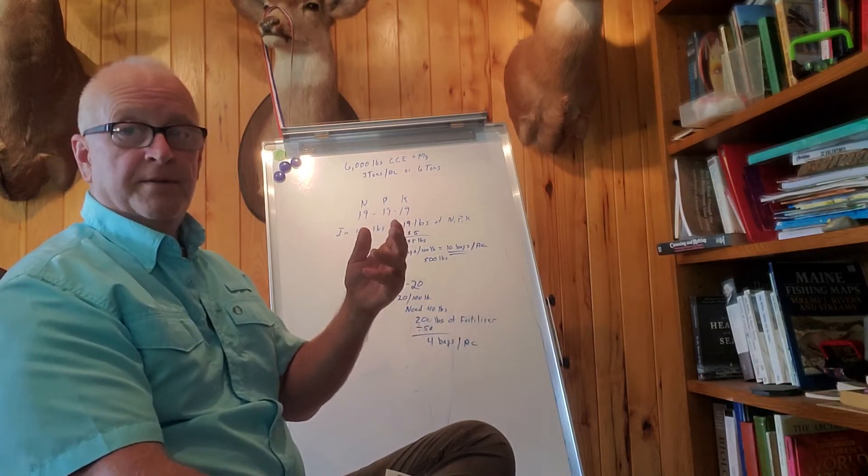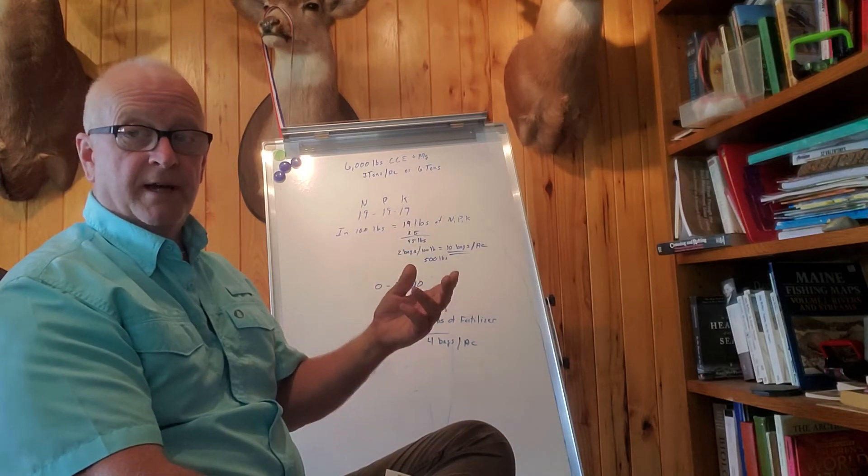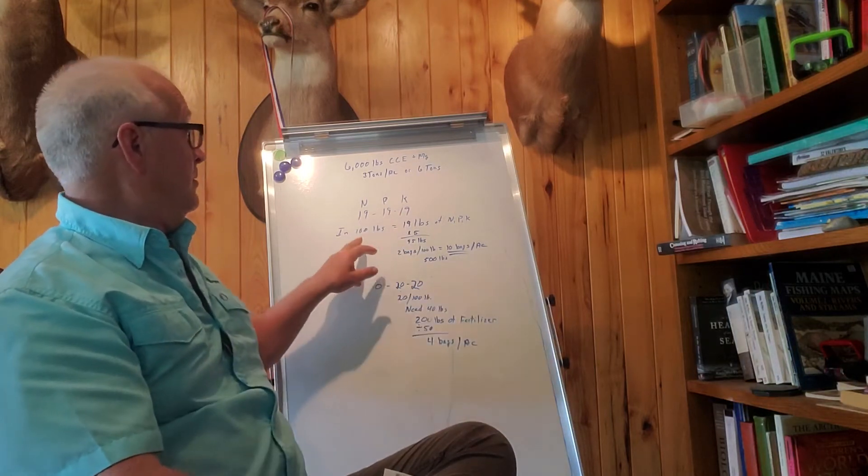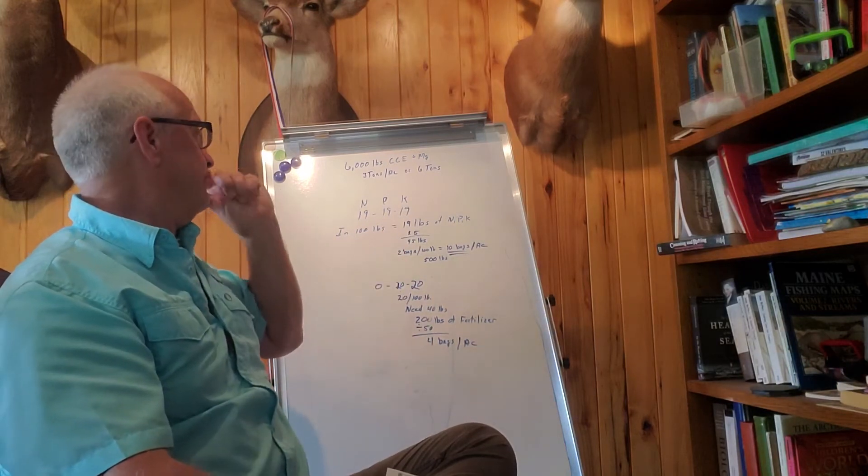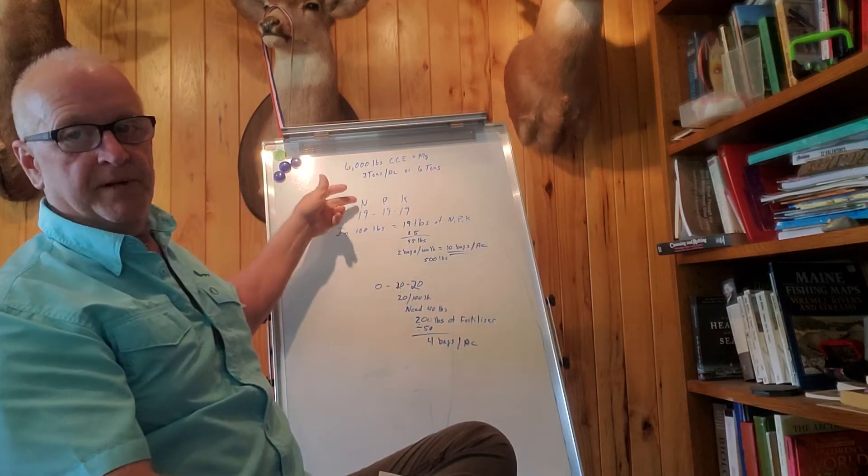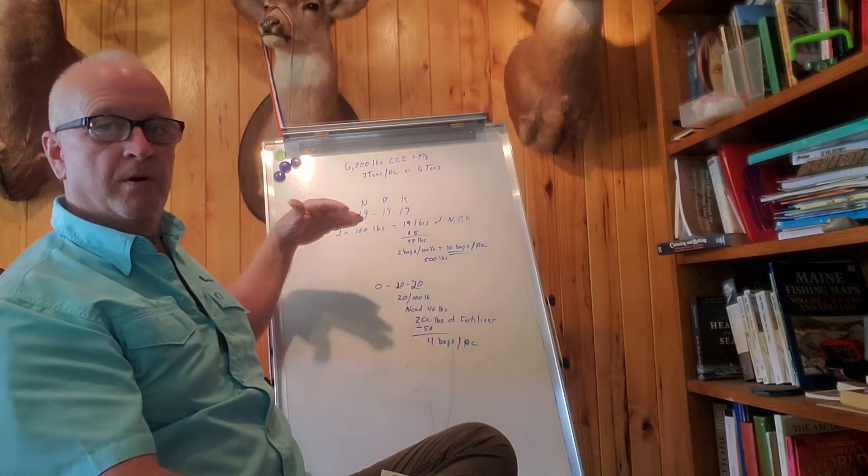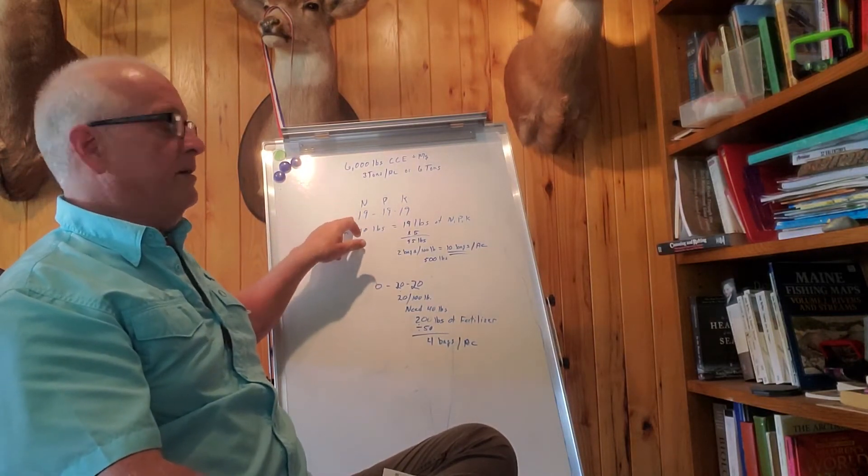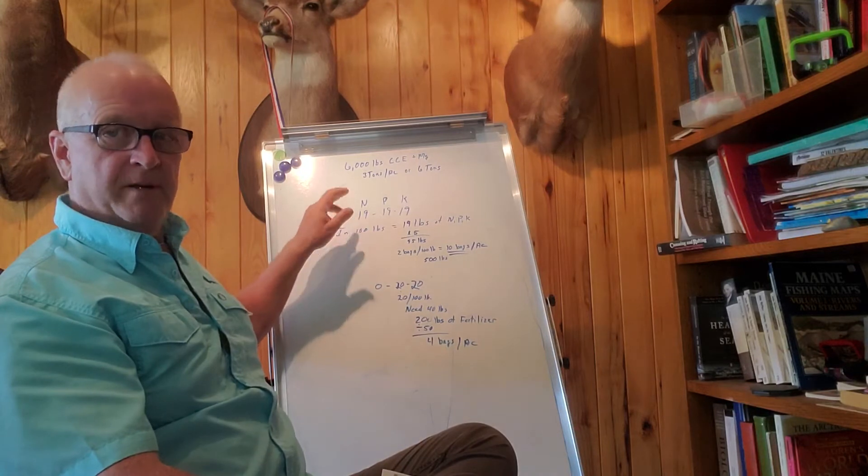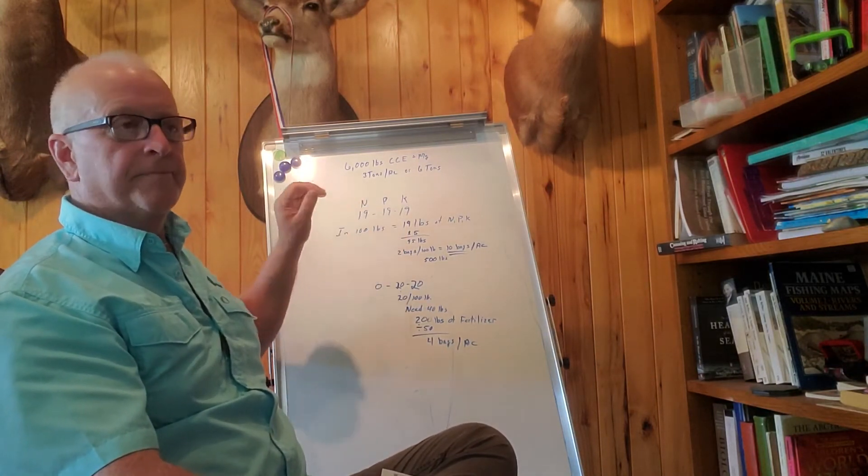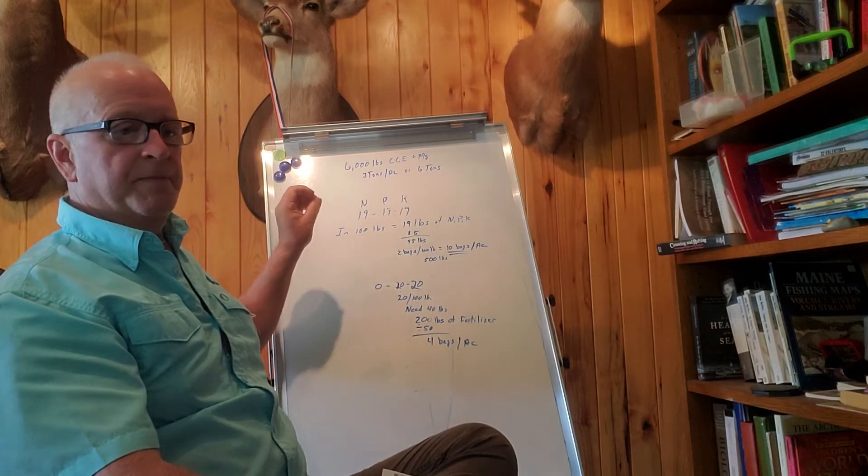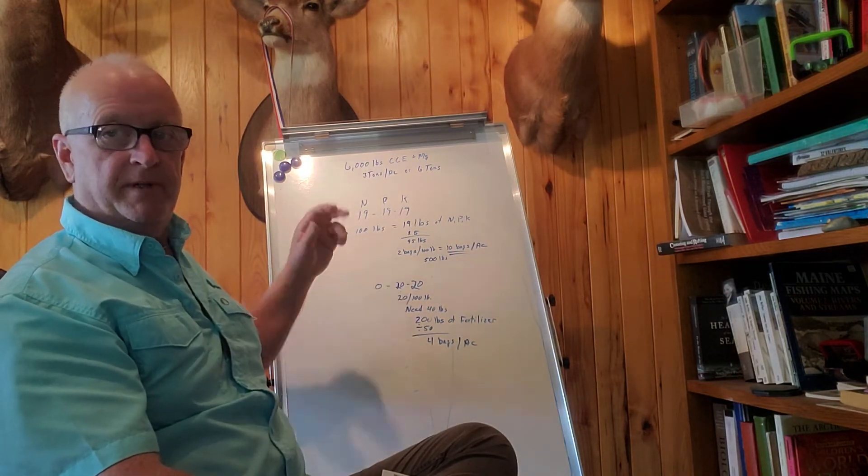That way the lime will take effect a lot quicker, and we won't lose any of our nitrogen because it'll be tilled in. Nitrogen can disappear on you either through leaching or evaporation. Usually you don't have that problem depending on where you buy it. I buy mine in bulk at Growmark, and what they do is they put a coating on it that keeps it from evaporating.